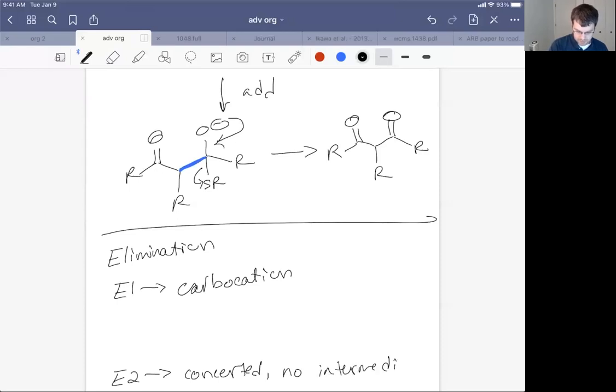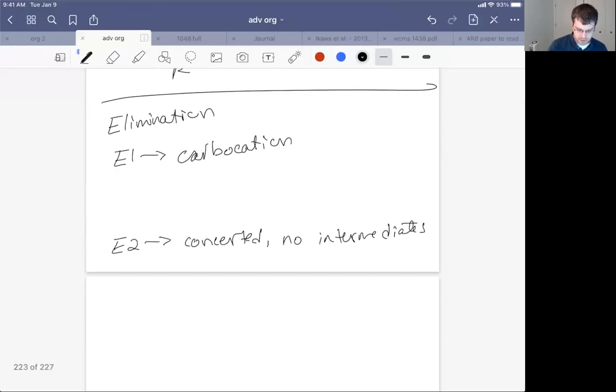E2 is no intermediates. So we have the positively charged intermediate, the no intermediate, and then the E1CB is not an E1. This is the opposite of a carbocation E1 reaction. This is one that involves a carbanion intermediate, or negatively charged.